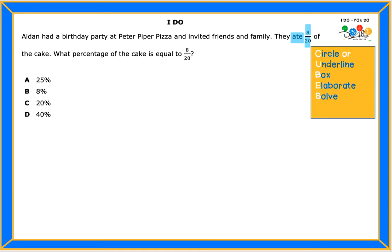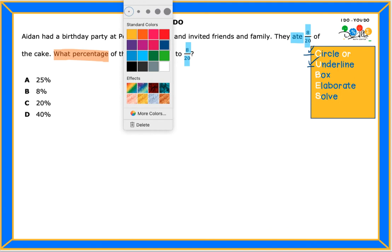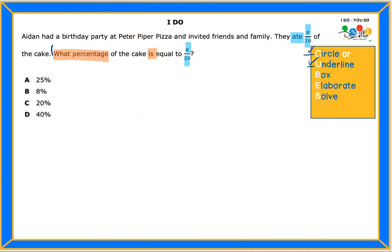The question now is what percentage is 8 over 20? This fraction here. So we did circle or underline by using the highlighters. Now I'm going to box the question. And the question is what percentage is 8 out of 20? And now I'm going to elaborate. Because I see I have fractions and percent, I'm going to bring a t-chart so I can organize my information.